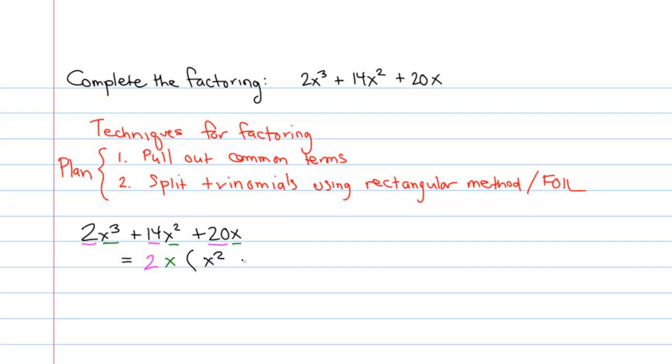If we pull a 2x out of 14x squared, 2 out of 14 leaves a 7, and an x out of an x squared leaves an x. And if we pull a 2x out of 20x, 2 out of 20 leaves 10, and we've factored out the lone x. And so we have a factorization as 2x times the binomial x squared plus 7x plus 10.